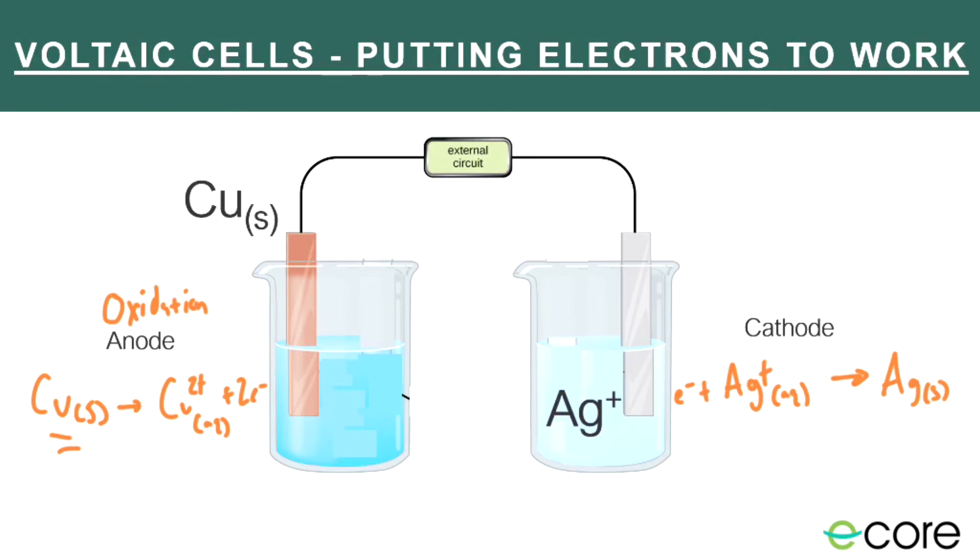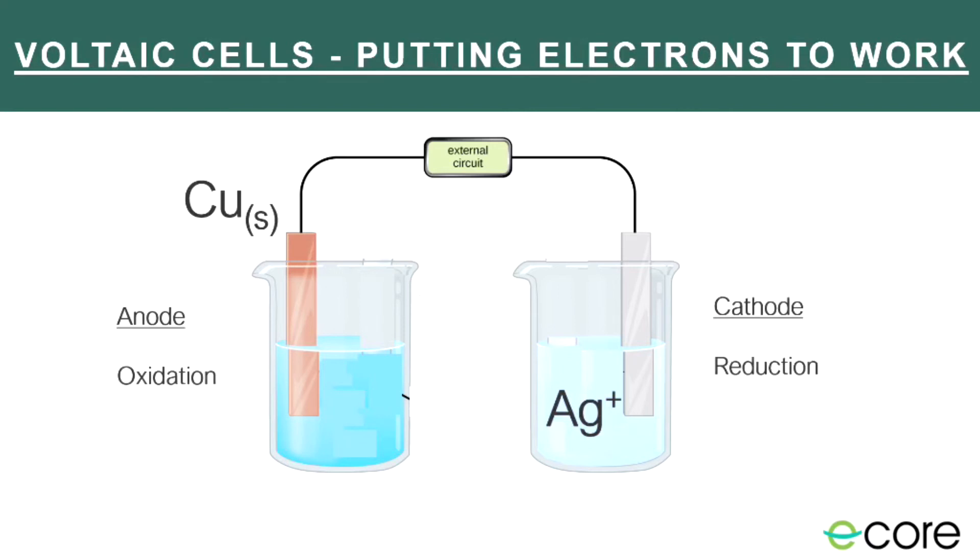Meanwhile, on the cathode side, we're adding an electron, and so that's a reduction. And those always go together. A cathode always goes with a reduction, and an anode always goes with oxidation. One easy way to remember that is that anode and oxidation both start with vowels, and that cathode and reduction both start with consonants. So that's an easy way to remember what's going on at the anode and the cathode.